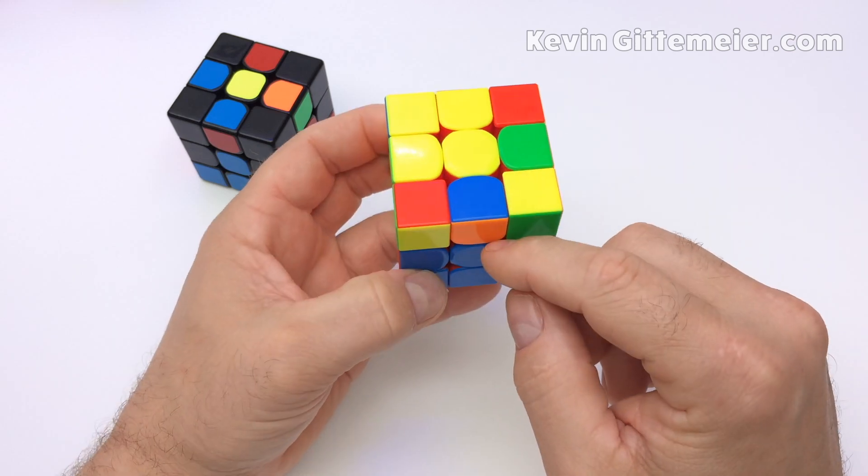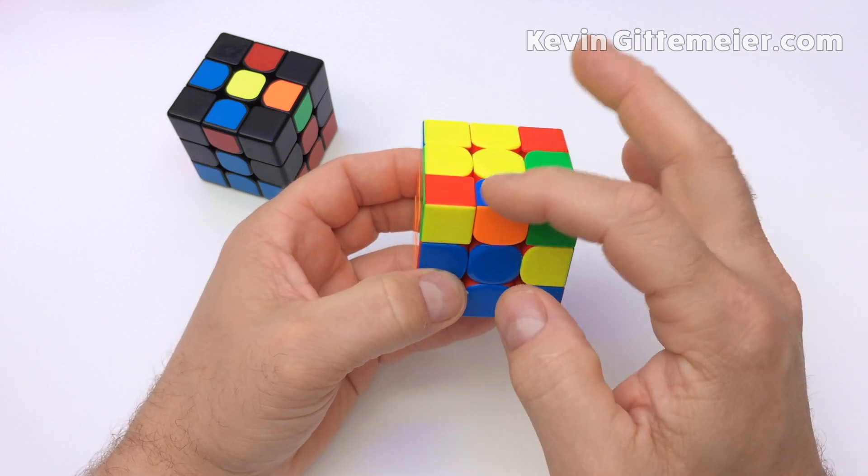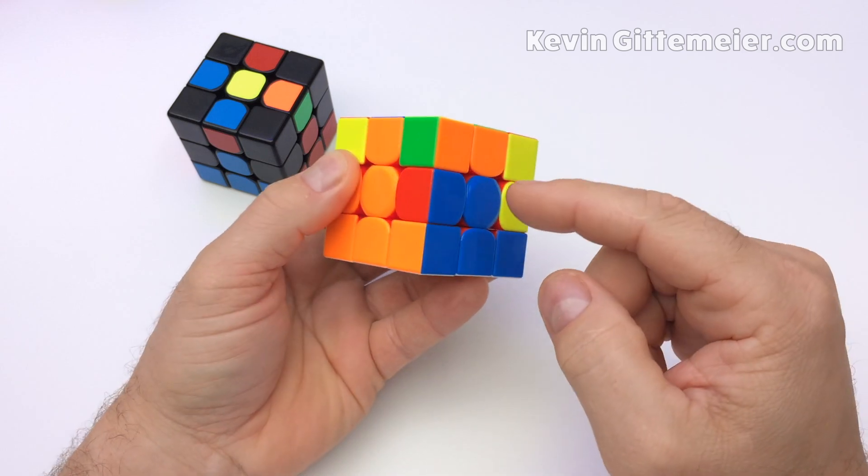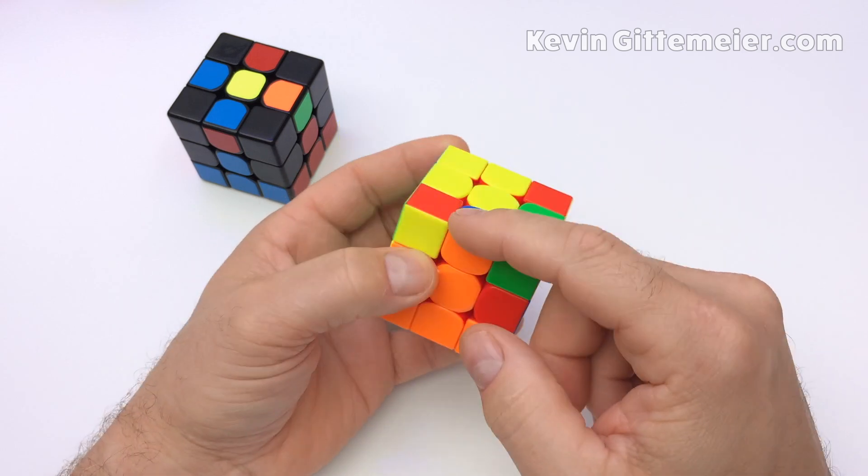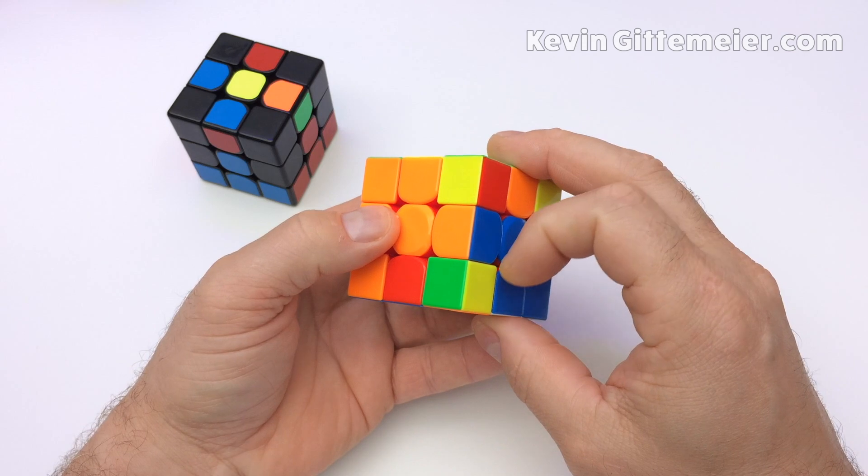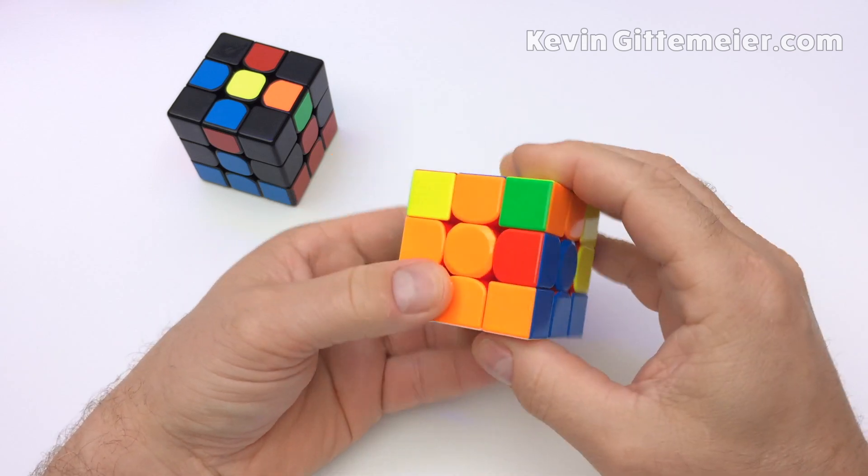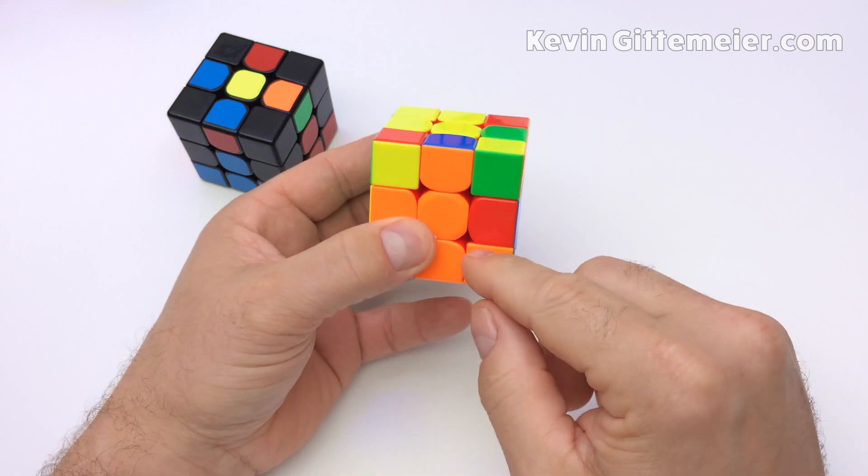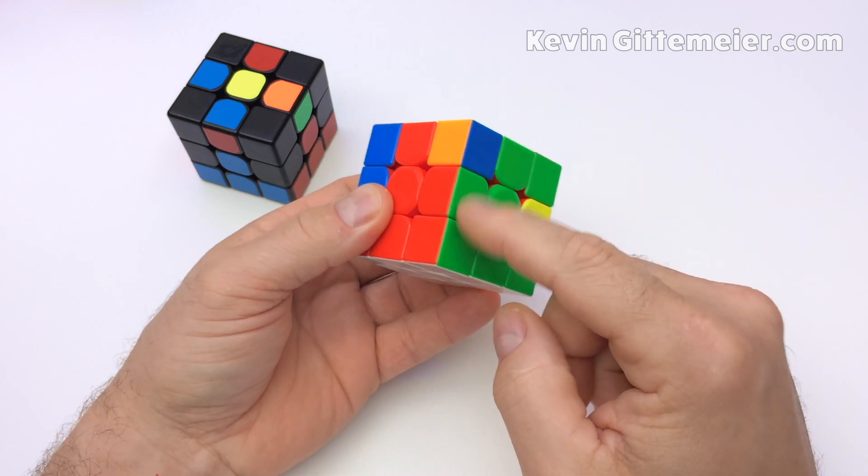Once you find an edge with no yellow, notice the color on the side, not the top, and spin the top until it matches its center color. Notice its intended location. We want to get it here without disturbing the first layer. What we're going to do is take the corner out, pair it up with this edge and reinsert them both together like this.